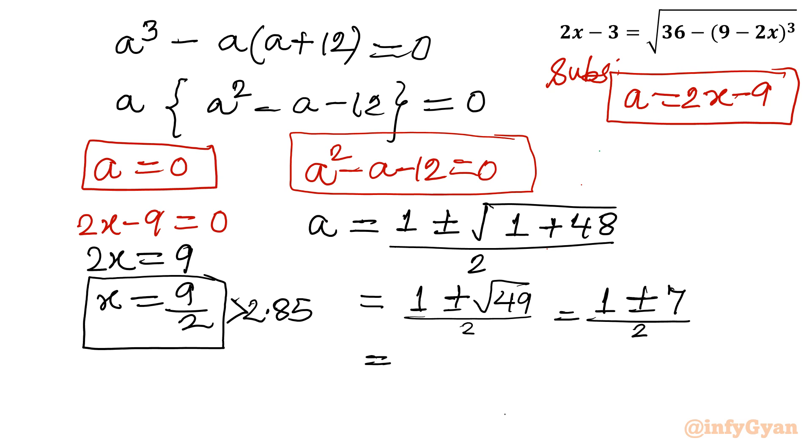Which I will further write as 1 plus minus 7 divided by 2. Now it will be 1 plus 7 over 2, so 4, and 1 minus 7 over 2, so minus 3. This is our a.